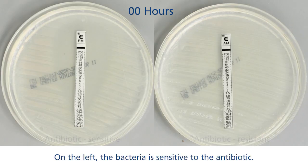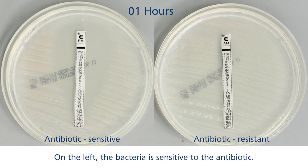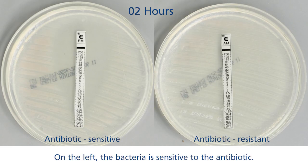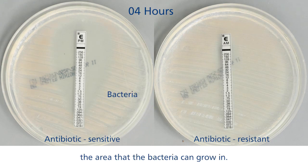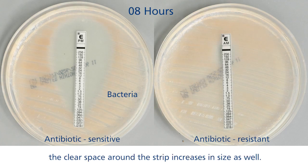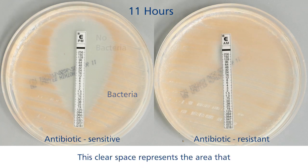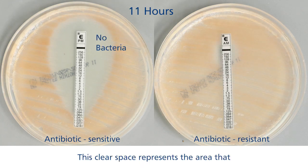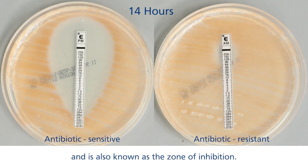On the left, the bacteria is sensitive to the antibiotic. The space covered in orange represents the area that the bacteria can grow in. As the concentration of the antibiotic increases, the clear space around the strip increases in size as well. This clear space represents the area that the bacteria cannot grow because of the antibiotic, and is also known as the zone of inhibition.